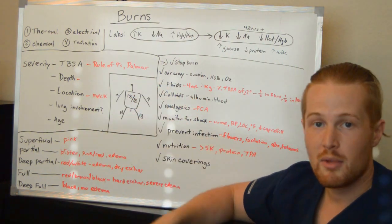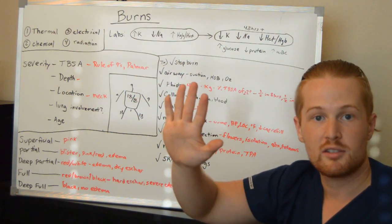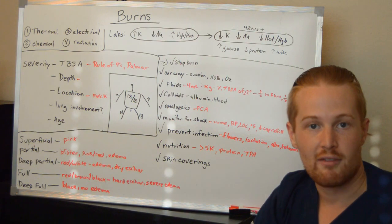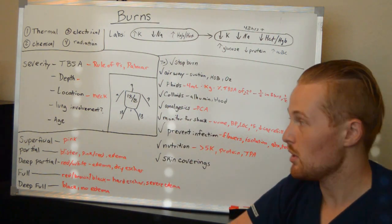Also, you can use the palm method, in which for each palm size section of the patient's skin that is burned, that's half a percent. So if you can use your palm to kind of gauge how much of their skin is burned.